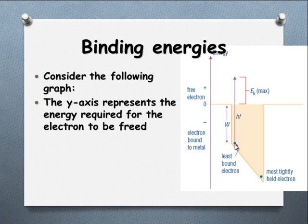The electron that was easiest to release would have this amount of energy that it had to absorb before it could be released from the metal, right down to the most tightly held electron, who would require all of that energy to be released.